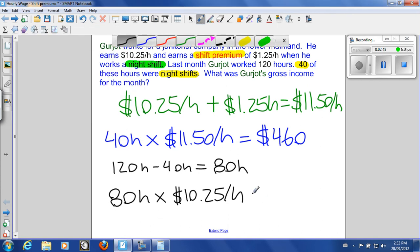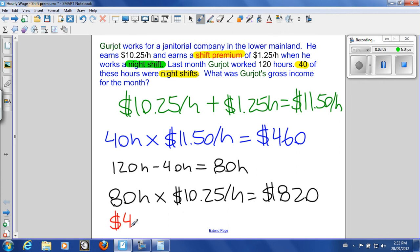So he gets $820 for his daytime shifts and $460 for his night shifts. If we add these two amounts together, that is what he's getting paid for the 120 hours he worked for this month. $460 plus $820 for a grand total of $1,280. Which means that Gurjot's gross income for the month was $1,280.